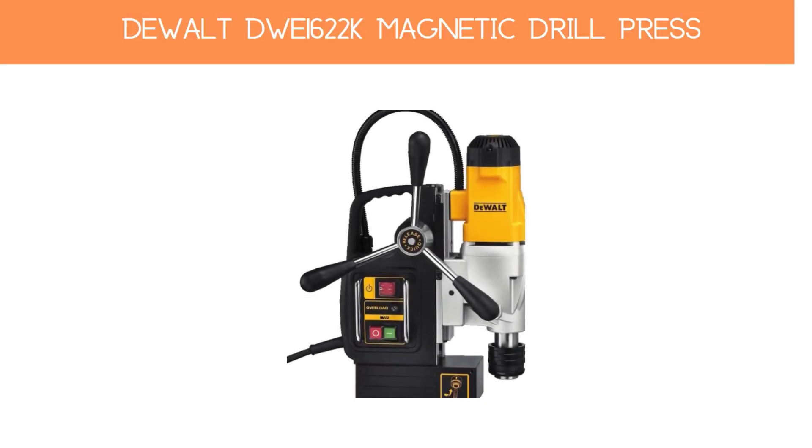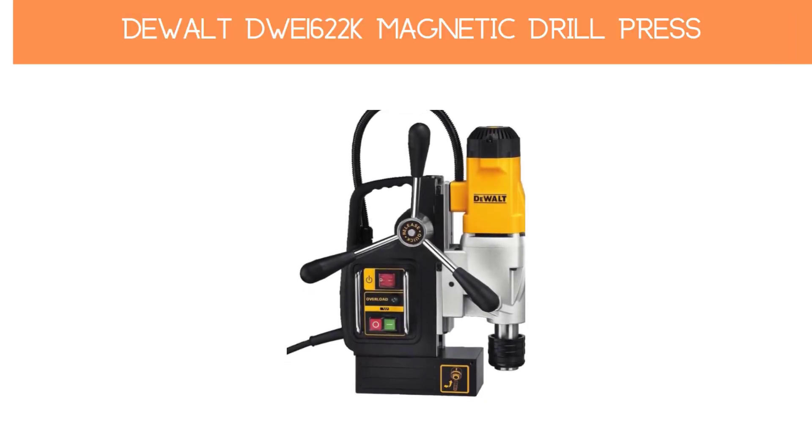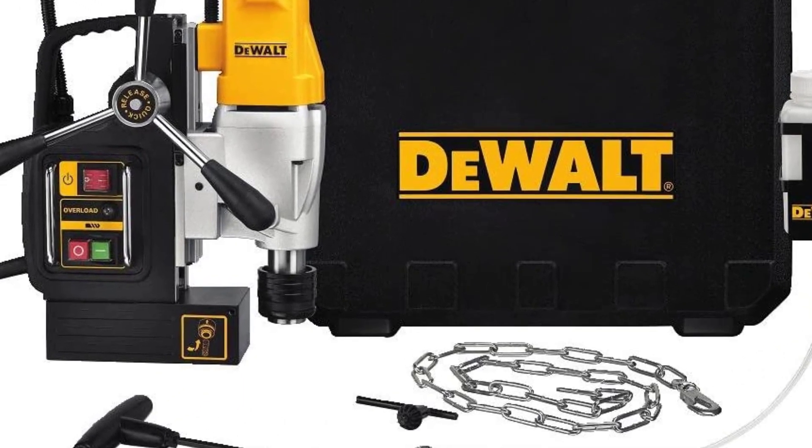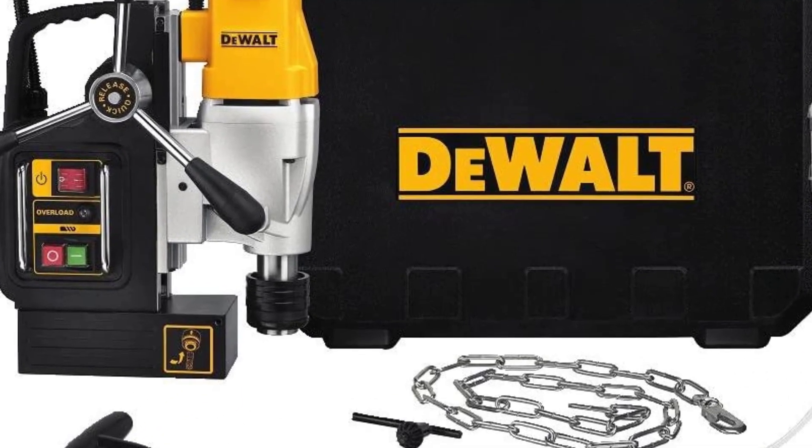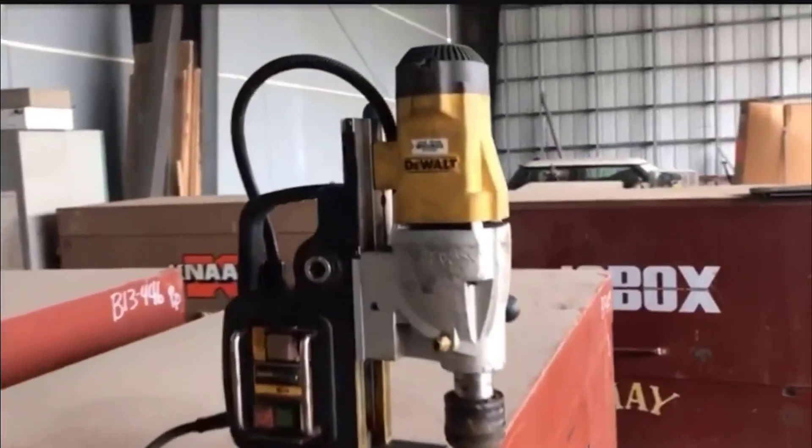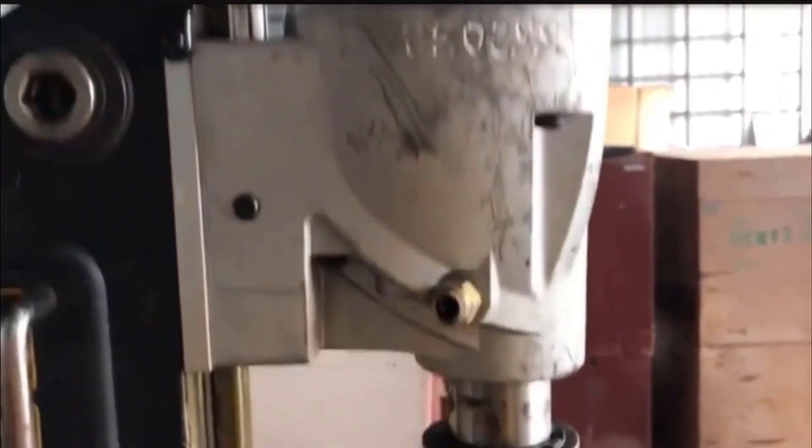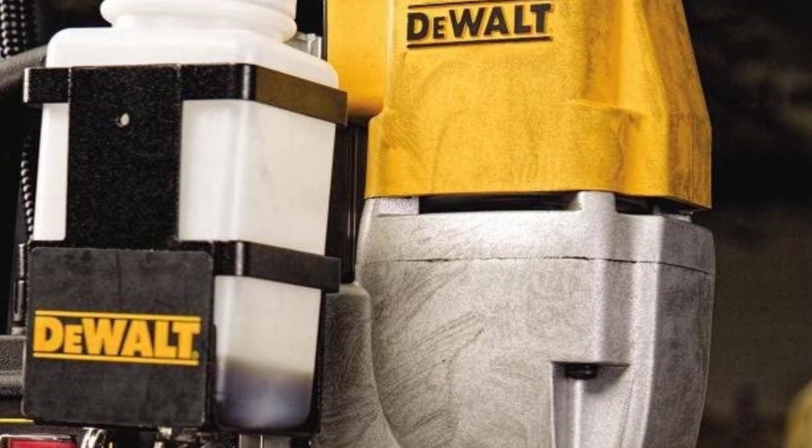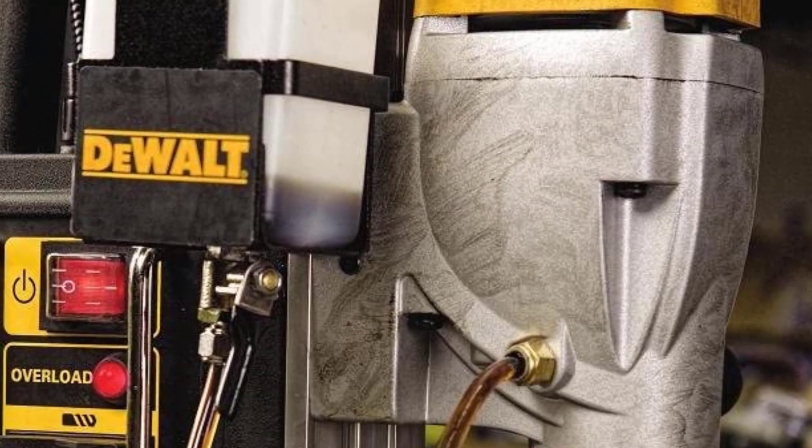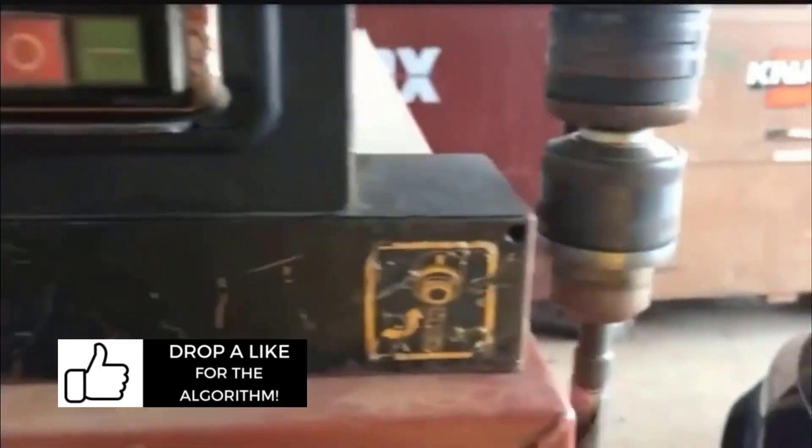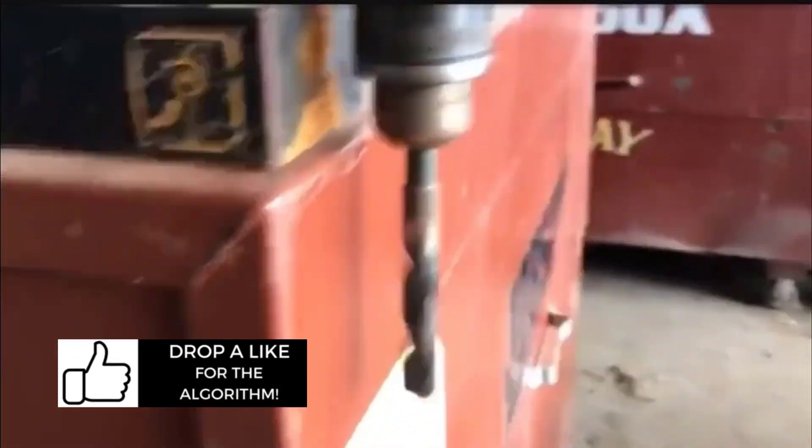Number 5: DeWalt DWE 1622K Magnetic Drill Press. Working with wood or polymers is different from drilling through metal. You need a drill press that is extremely flexible for various types of metal since metal densities vary. With a 2-speed, 10-amp motor and 4 inches drill travel, the DeWalt DWE 1622K Magnetic Drill Press is designed for drilling through steel or metals that are similar to it. The tool can be placed on any ferrous surface that is at least half an inch thick thanks to its magnetic base.